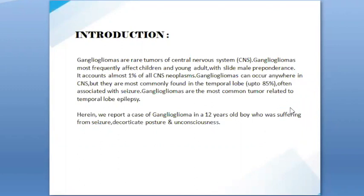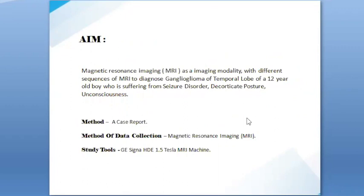They are often associated with seizures. Gangliogliomas are the most common tumor related to temporal lobe epilepsy. Herein we report a case of ganglioglioma in a 12-year-old boy who was suffering from seizures, decorticate posture, and unconsciousness. MRI was used as the imaging modality with different sequences to diagnose ganglioglioma of the temporal lobe.